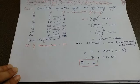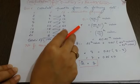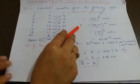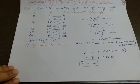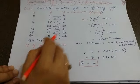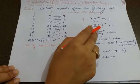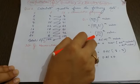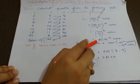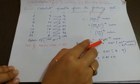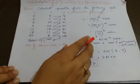first quartile ko obtain karne ke liya, aapka jo formula hai, woh hai n plus 1 by 4th value. So here we had obtained 100, that is n. You substitute the value of n and you will get this 101 by 4. Solve this, then this will give 25.25th value.